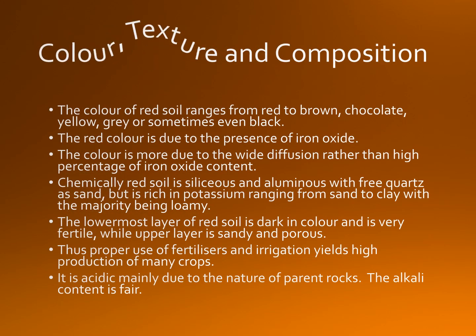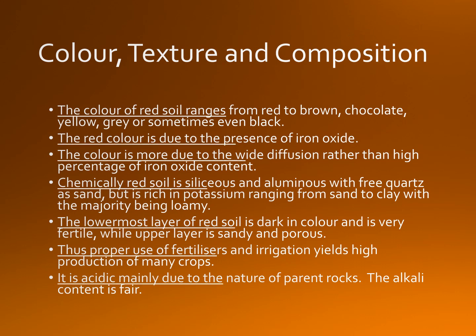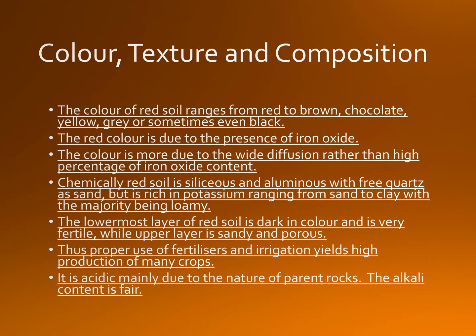Color, texture, and composition: The color of red soil ranges from red to brown, chocolate, violet, yellow, gray, or sometimes even black. The red color is due to the presence of iron oxide. When limestone, granites, gneisses, and quartzites are eroded, the clay enclosed within the rocks remains intact with other forms of non-soluble materials. In oxidizing conditions, rust or iron oxide develops in the clay when the soil is present above the water table, giving the soil a characteristic red color. The color is more due to the wide diffusion rather than high percentage of iron oxide content.